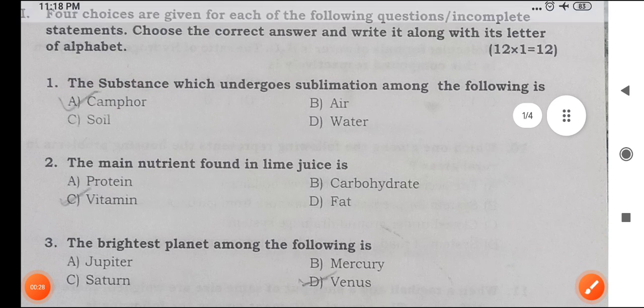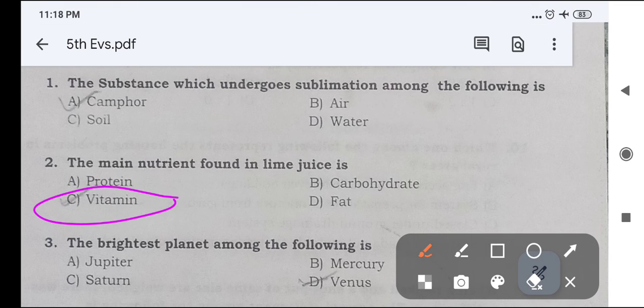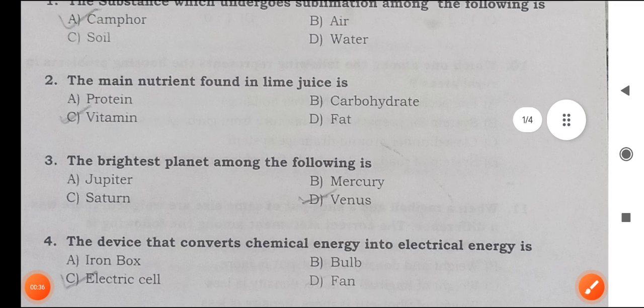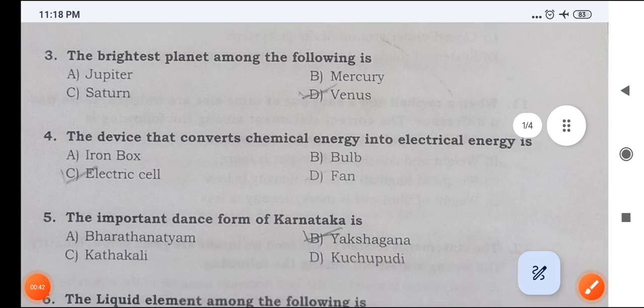Next question, the main nutrient found in lime juice is Vitamin. C option is the right answer. Next, the brightest planet among the following is, answer is D option, Venus.